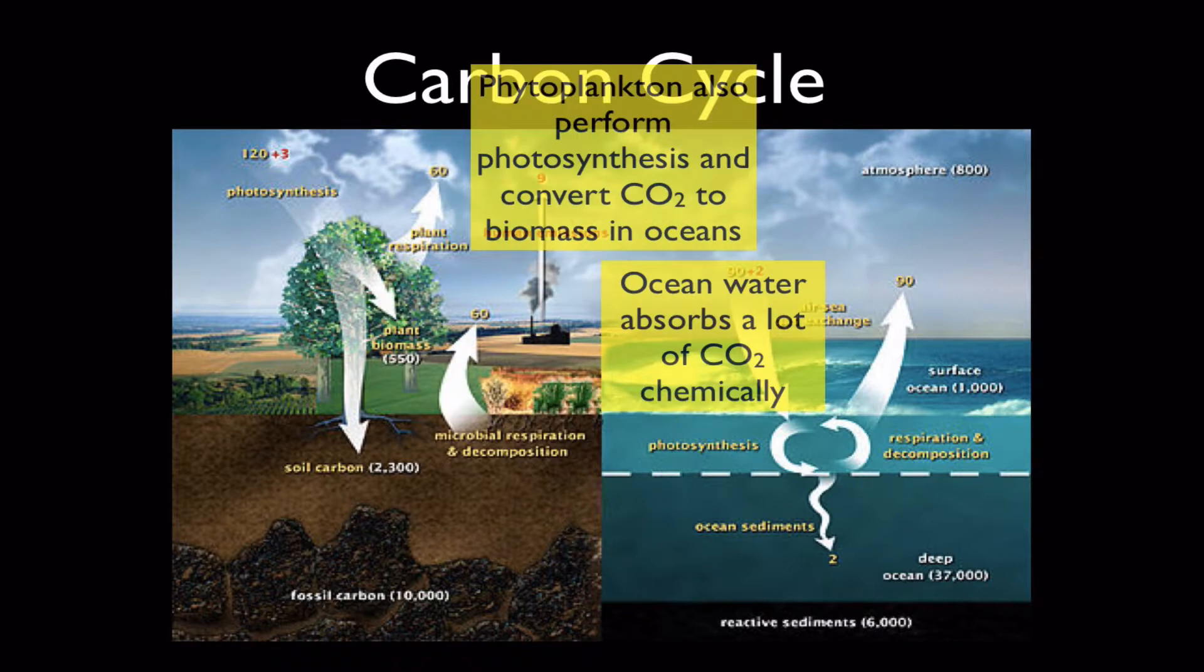Phytoplankton in the ocean also do photosynthesis and they capture biomass in their tissues. Because they're phytoplankton, if they don't get eaten they're going to settle down in the ocean sediments and we can build up fossil fuels underwater also. Ocean water as a chemical, salt water, can also absorb carbon dioxide in pretty large amounts and store it away as different types of ions. You can think of ocean water as a giant reservoir for dissolved CO2.